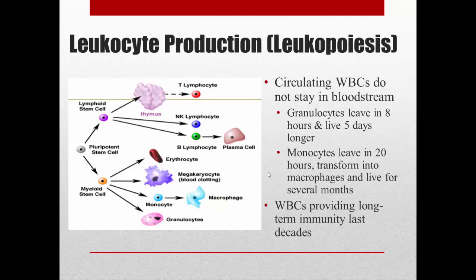These circulating white blood cells don't stay in the bloodstream for very long. Granulocytes leave after about eight hours and live for about five days. Monocytes leave after about 20 hours and live for several months. So they spend more of their life in connective tissues or lymphatic tissues than actually in the blood. White blood cells also provide long-term immunity that can last for decades, thanks to the memory cells responsible for that long-term immunity.